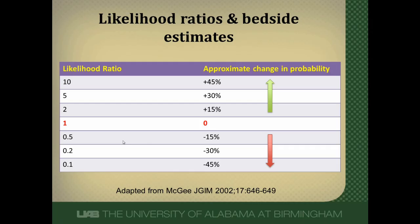The greatest changes in probability come with the highest likelihood ratios — especially 10 or greater — which really increase post-test probability, while likelihood ratios of 0.1 or less really reduce it. Pick tests with the highest positive likelihood ratios to rule in disease, and tests with the absolute lowest negative likelihood ratios to rule out disease. Hope this video has helped you understand more about likelihood ratios. If you have questions, contact me through the course website or through the contact section of my blog. Have a great day.